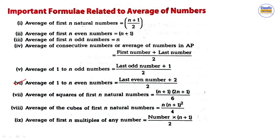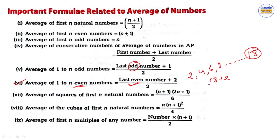Average of 1 to n even numbers: the even numbers go up. For example, 2, 6, 8 … The last even number is 18. The formula gives 18 plus 2 divided by 2, which equals 20 divided by 2, equal to 10. So if the last even number is 18, the average is 10.